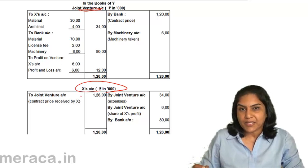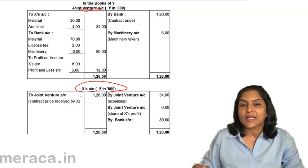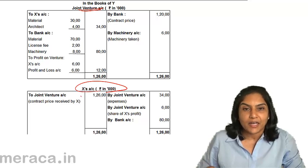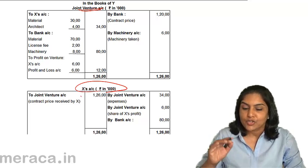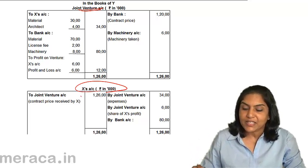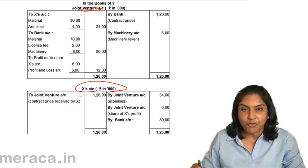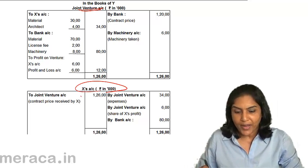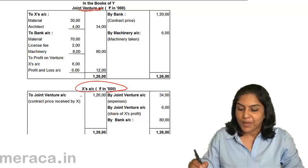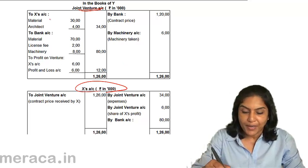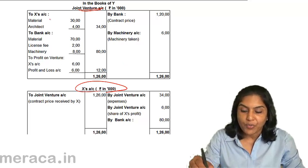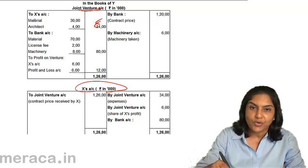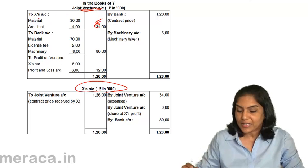For X's own expenses, his bank account would be credited. For the expenses of 34 lakhs met by X, the entry in Y's books would be: Joint Venture Account debit to X's Account, 34 lakhs.